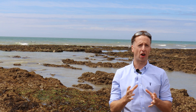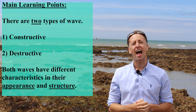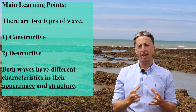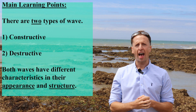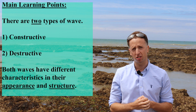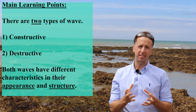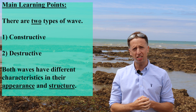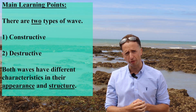Although all waves are different, there are two main types. Both of these waves — constructive and destructive — have different characteristics in their appearance and structure. This makes it possible to clearly identify the two different types of wave.